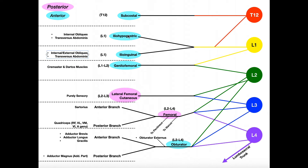Once past those two, the nerves of the lumbar plexus start innervating structures in the pelvic cavity and lower extremities. The next nerve is the genitofemoral nerve, which gets contributions from both the L1 and L2 ventral rami — so we say it's L1 to L2. This nerve innervates the cremaster and dartos muscles, which are involved in regulating the temperature of sperm cells in males by drawing the testicles closer to the body in cold environments and relaxing in warm ones.